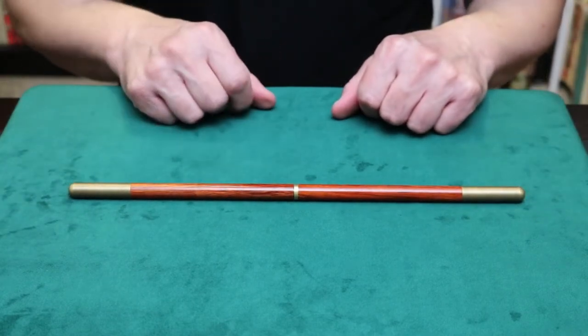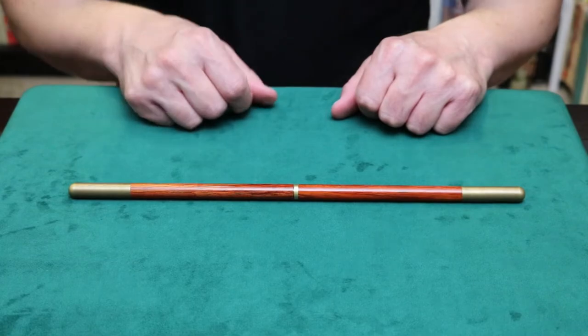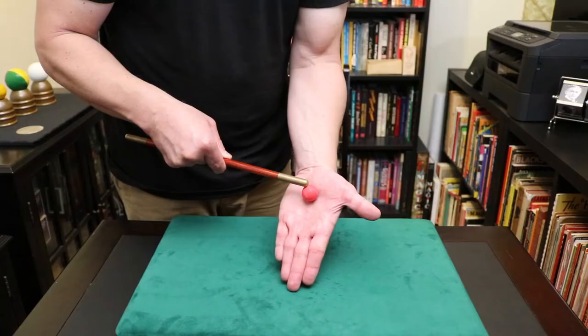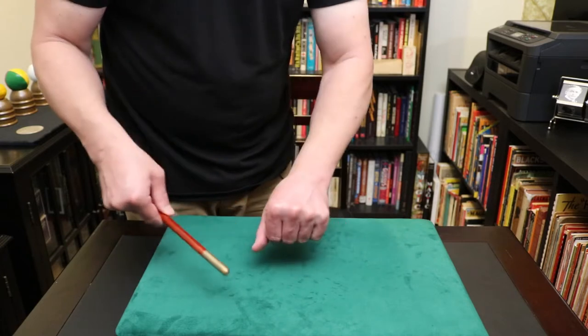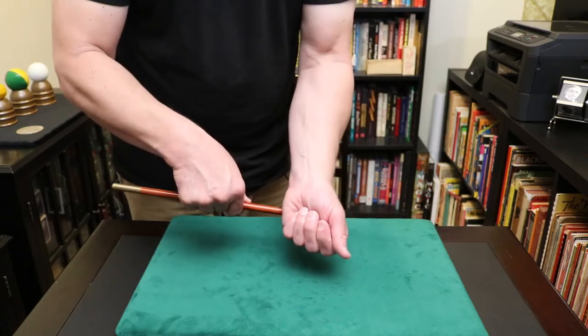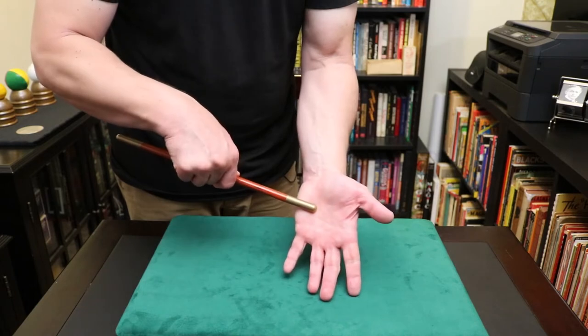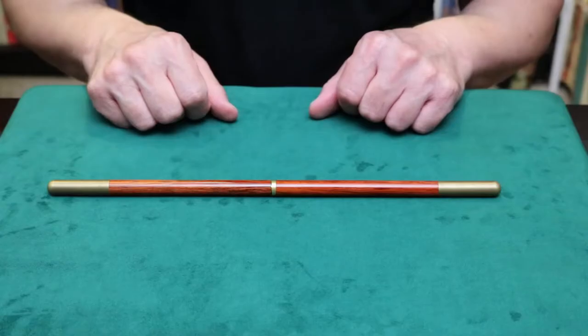This is the Magic Makers magic wand, and it's really well weighted. If you want to do stuff like the Mora wand spin, or more popularly known as the Vernon wand spin, you can do that. This is great for all your magic wand needs.